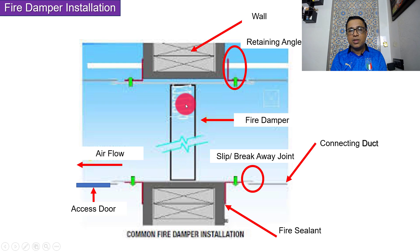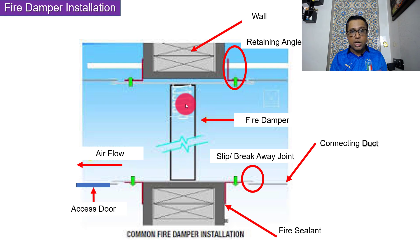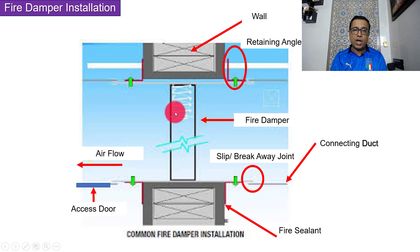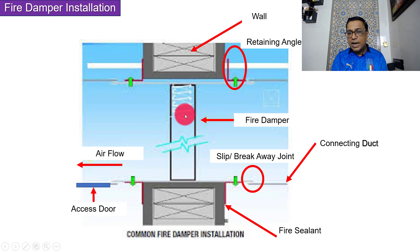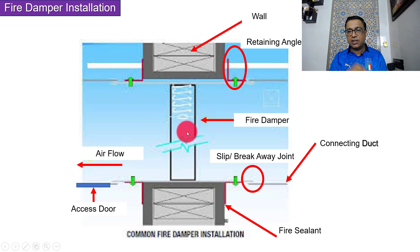With a fusible link fire damper, there are chances the fusible link might get damaged or may not work. In that case, the entire airflow might be affected. So you must have an access door — and if there is a ceiling, an access point in the ceiling as well — so you can go in and service the fusible link.